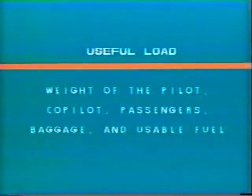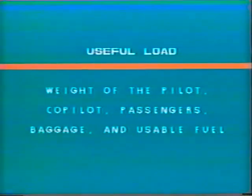Useful load is the weight of the pilot, co-pilot, passengers, baggage, and usable fuel — it is the empty weight subtracted from the maximum allowable take-off weight. Some aircraft with a high fuel burn rate are allowed to load heavier than maximum take-off weight; the difference between ramp weight and take-off weight is the fuel burned during taxi and run-up. Other aircraft also have a maximum landing weight, which may be further limited by runway length or atmospheric conditions.